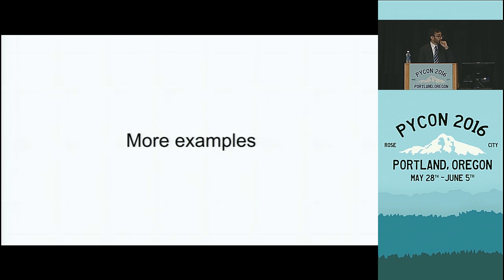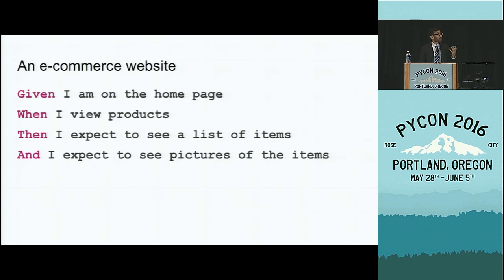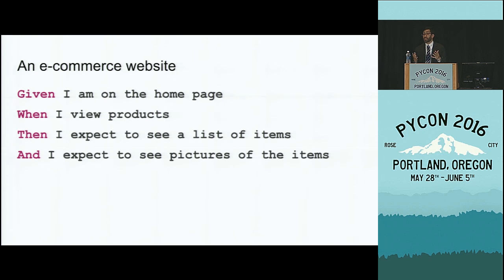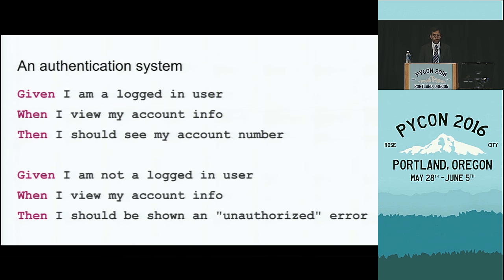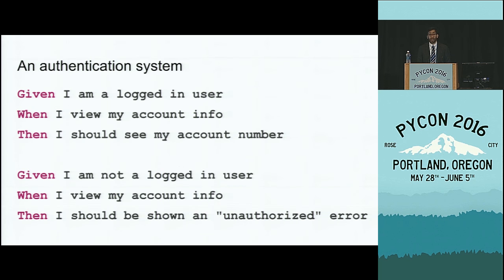If we look at examples from different domains: if you're at Rent the Runway and we have our e-commerce website, then maybe if you're a customer you expect to go see a list of products and pictures of dresses. If you're implementing an authentication system, this is how I would describe how a user would perform authentication. In this case I'm not talking about tokens, encryption, or handshakes — all I'm talking about is if I'm a user trying to log in somewhere, how do I expect the system to behave?